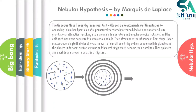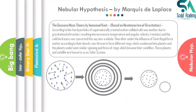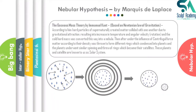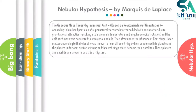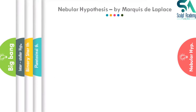Under the influence of centrifugal force, matter was thrown out according to density to form different rings, which condensed into planets, as seen in the animation. Similarly, these planets also rotated in the same way, leading to the formation of moons or satellites. This whole system is today known as the solar system.